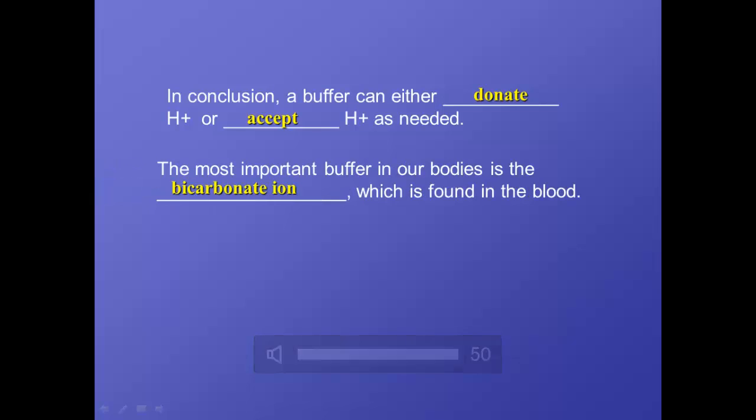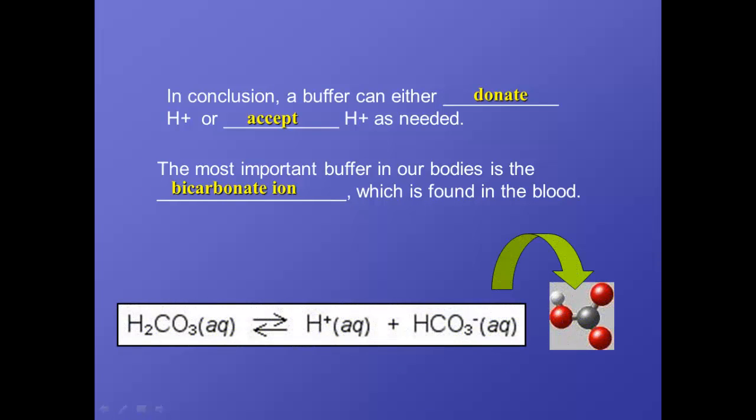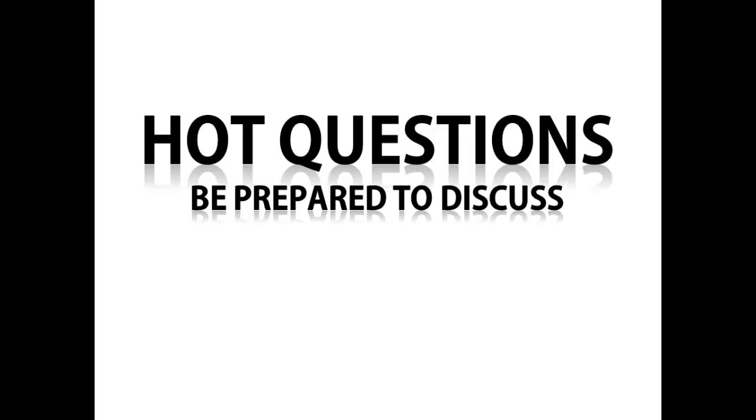The most important buffer that we have in our bodies is the bicarbonate ion, and we find that in the blood, and it's doing this all the time, giving away hydrogens, taking hydrogens. So here is the bicarbonate ion, HCO3⁻ negative, and that's what we've been talking about throughout this screencast. Make sure you come to class with all your hot questions.